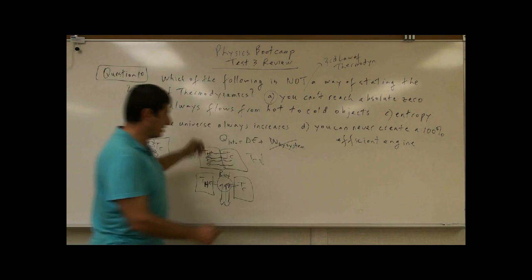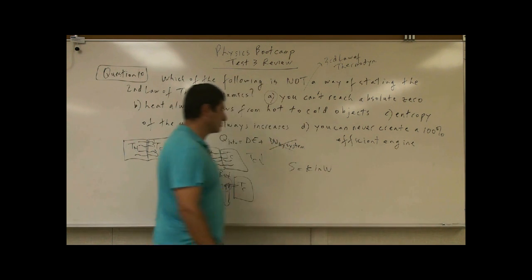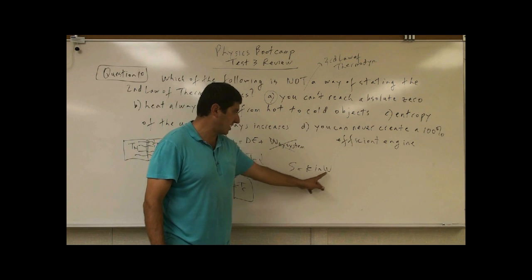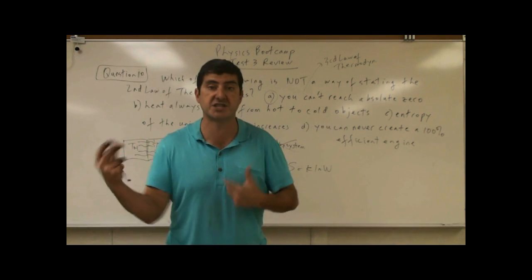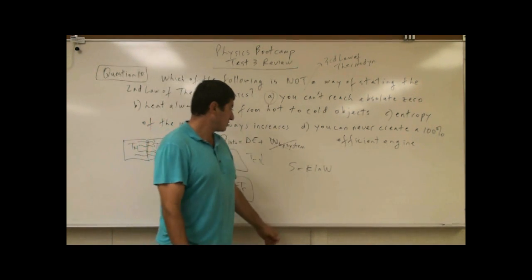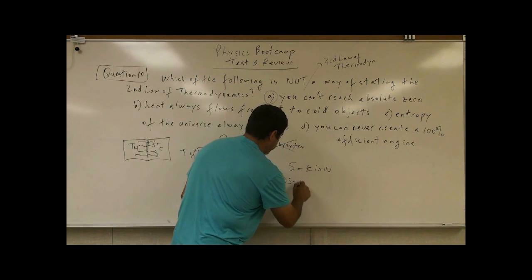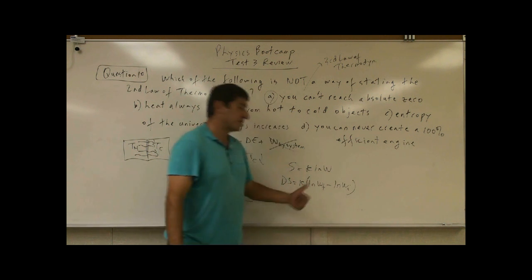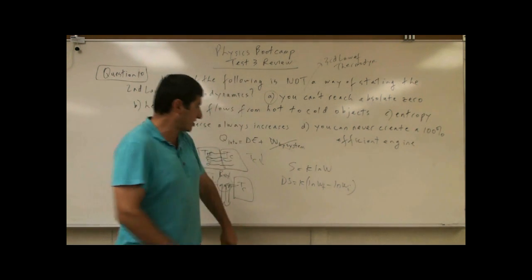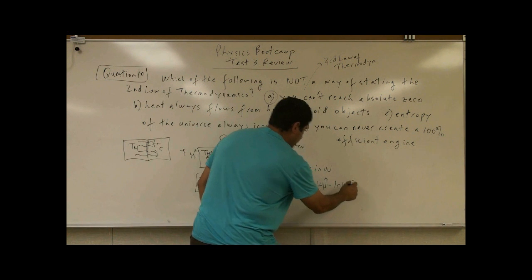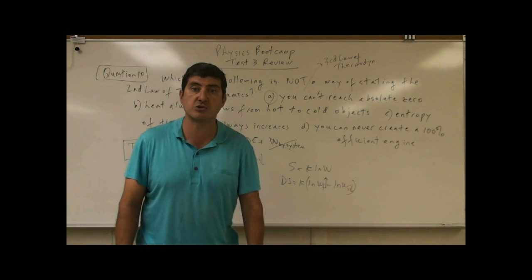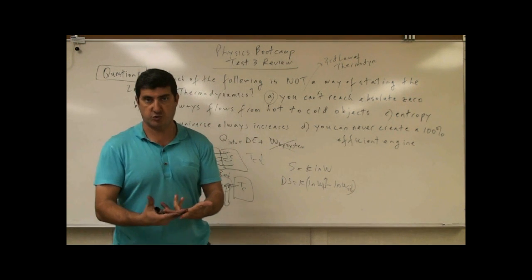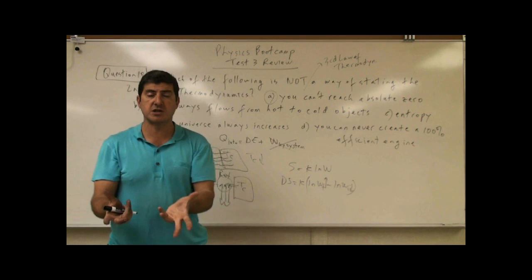C — entropy of the universe always increases. S equals k times the natural log of W, where entropy of a system equals the Boltzmann constant times ln(W), and W is the disorderliness of the system — a measure of how disordered the system is. The change of entropy of any system has to be such that the disorderliness always goes up: W final is greater than W initial, so entropy of a closed system always has to increase.